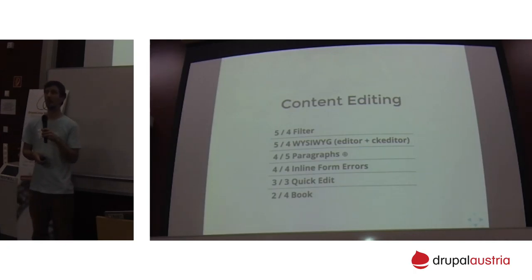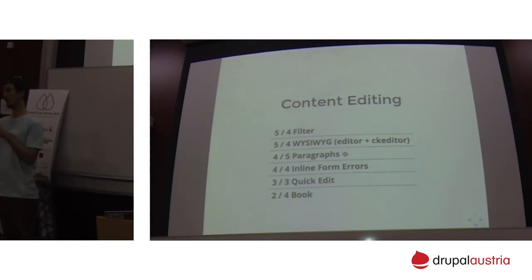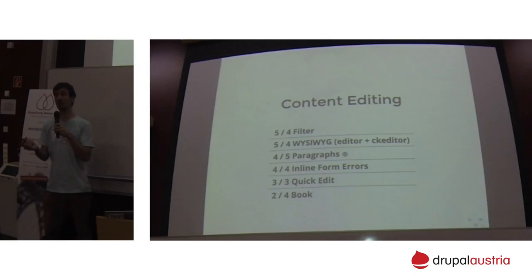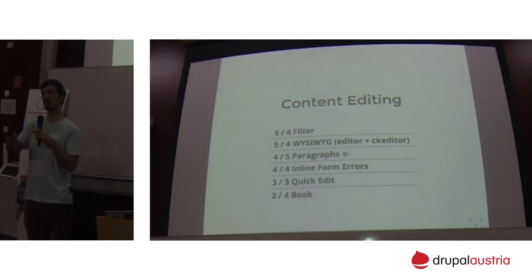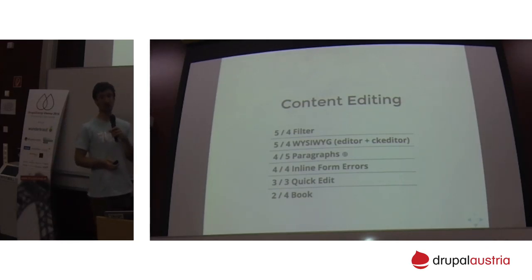Whereas before we would pre-define all the different sections of a landing page and the client could fill them out, with the Paragraphs module we can prepare different kinds of content elements - a row of gallery images, a slideshow, an accordion based on whatever information they can input. The client themselves can then choose from a palette of possible content elements and arrange them as they want. Definitely check out the Paragraphs module - it's also compatible with multilingual in Drupal 8.